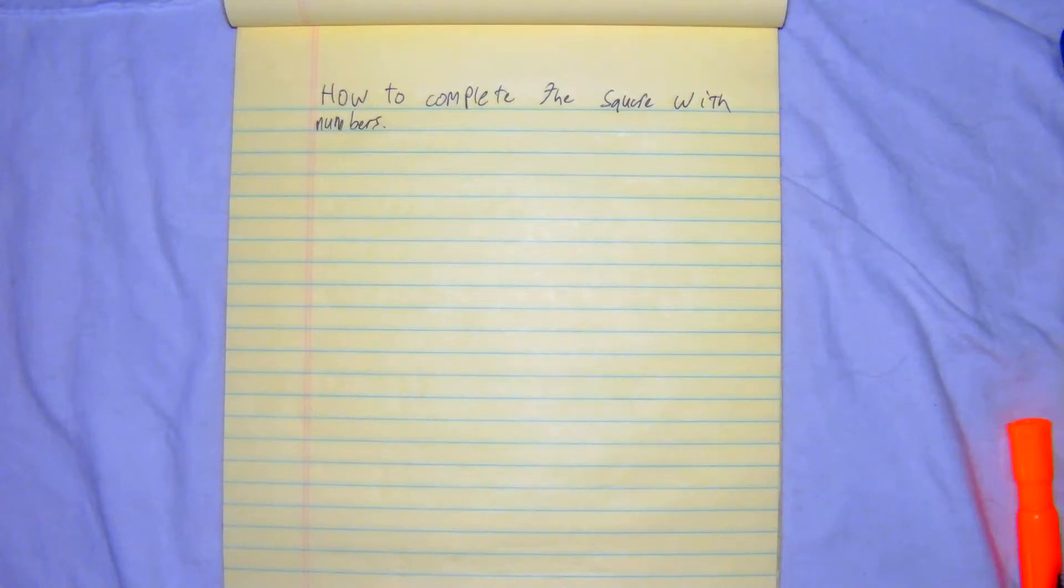All right, now that we showed you an algebraic kind of visual with variables, this one will be much more clear and concise. This is how to complete the square with numbers.